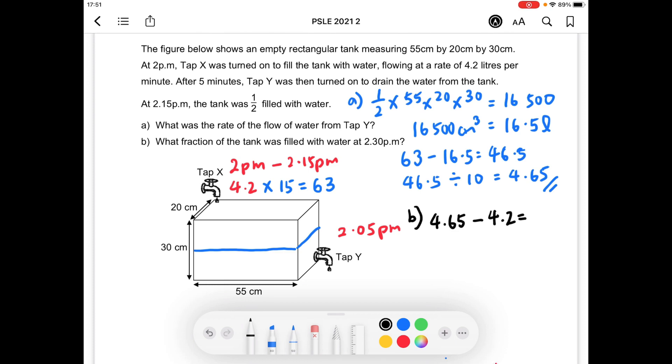So overall, with every passing minute after 2:15 p.m., 0.45 liters of water will be drained off from the tank, because more water is being drained off than going into the tank.